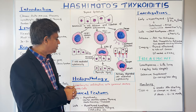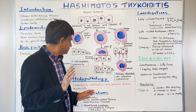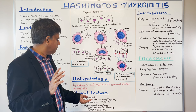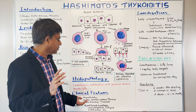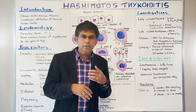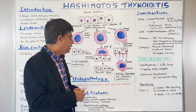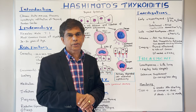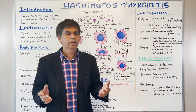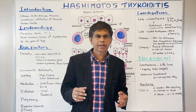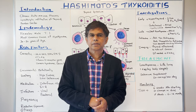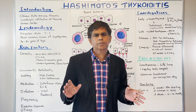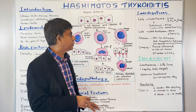Looking at the clinical features: early on, patients are usually asymptomatic. Then there can be a painless goiter with a rubbery thyroid. There can also be Hashitoxicosis — a transient toxic picture during that phase. Late presentation involves hypothyroid symptoms. Hypothyroidism can affect any organ system — mainly fatigue, cold intolerance, and constipation, among others.